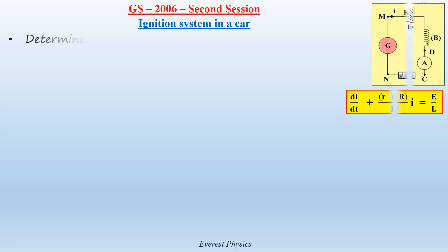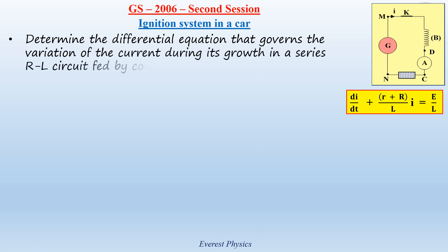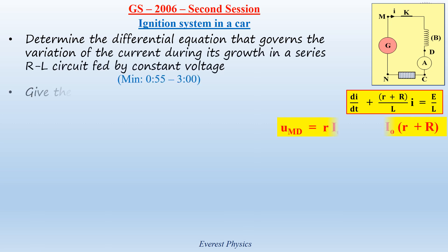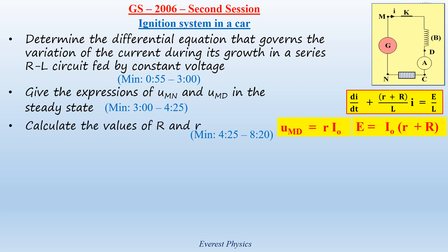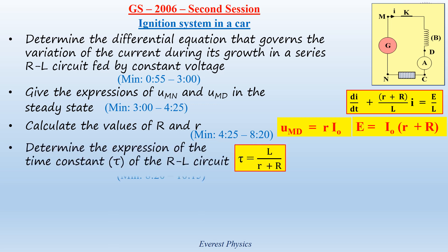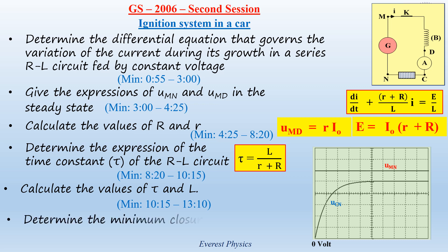In this solved exercise, we are going to determine the differential equation that governs the variation of the current during its growth in a series R-L circuit fed by constant voltage. Give the expressions of the voltage UMN across the power supply and UMD across the coil in the steady state. Calculate the values of the resistance of the resistor and the internal resistance of the coil. Determine the expression of the time constant Tau of the R-L circuit. Calculate the values of Tau and the inductance L of the coil. Determine the minimum closure duration of the switch.